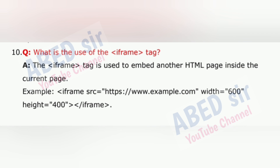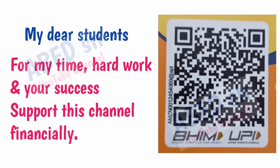Question 10: What is the use of the iframe tag? The iframe tag is used to embed another HTML page inside the current page. Example: <iframe src='https://www.example.com' width='600' height='400'></iframe>.